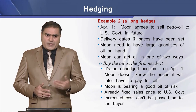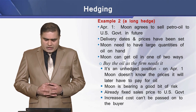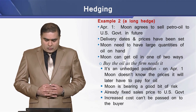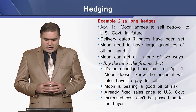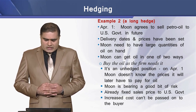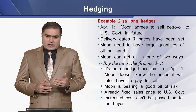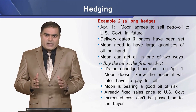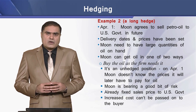Now, how does a long hedge position work? Let's take another example. On April 1, Moon agrees to sell petrol oil to the US government, with future delivery dates and prices already set. Moon needs to have large quantities of oil on hand. Moon can get oil in one of two ways. The first is to buy oil as the firm needs it. This is an unhedged position on April 1 because Moon does not know the prices it will have to pay for oil in the future. Moon bears risk because it has already fixed sale prices to the US government, and if costs increase, Moon cannot pass those costs on.